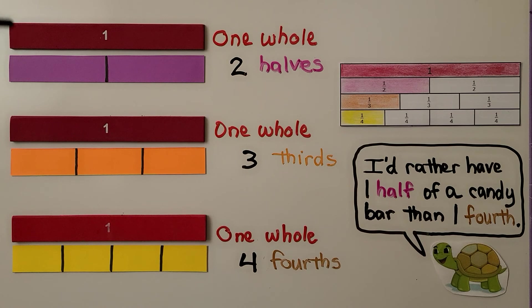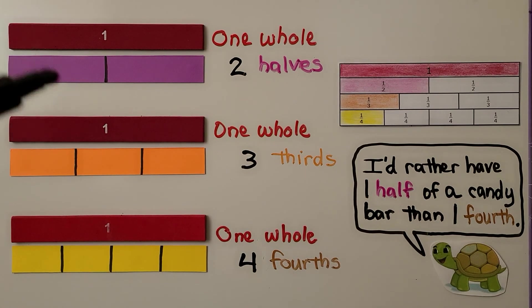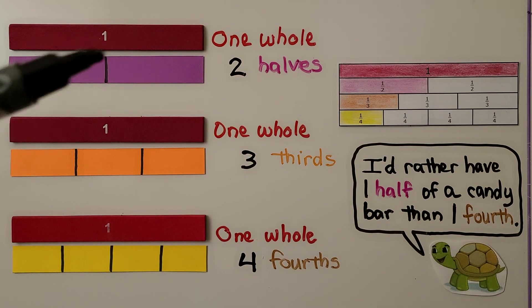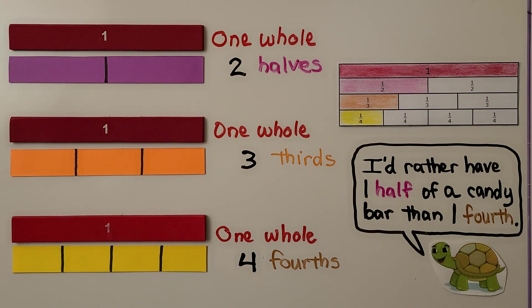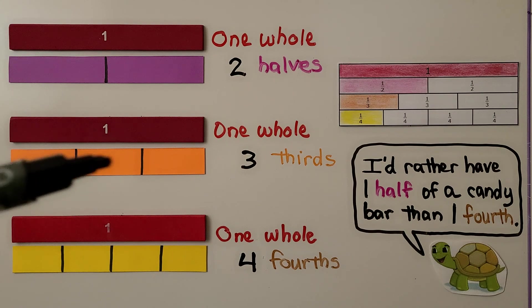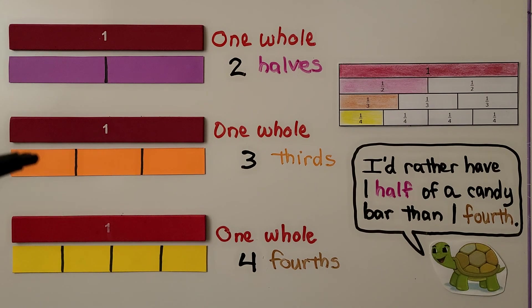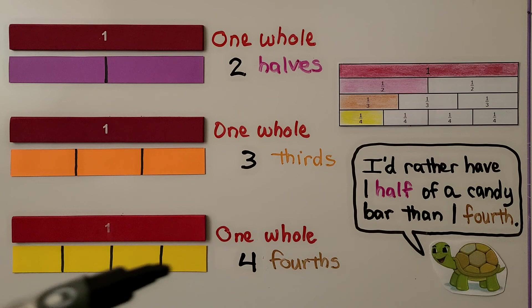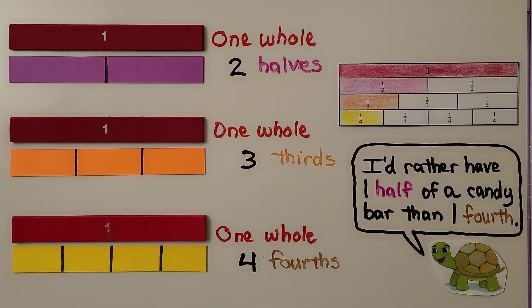This red bar stands for one whole. Here, the bar underneath it is two halves. Here we have another one whole, and this orange bar is in three thirds. Here's another one whole. This yellow bar is in four fourths.